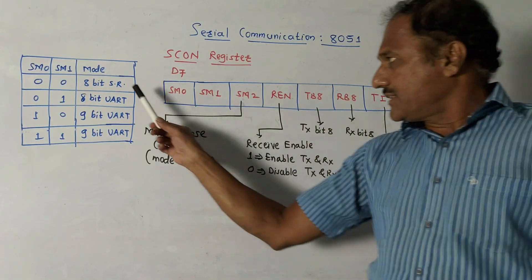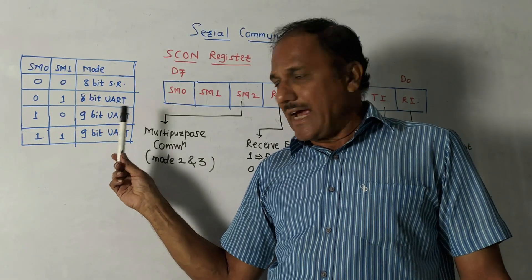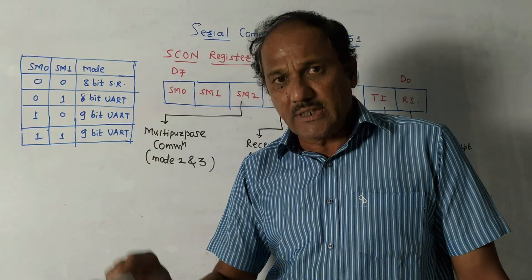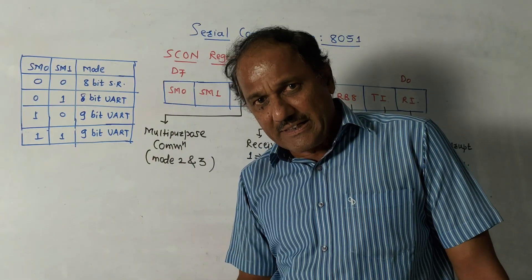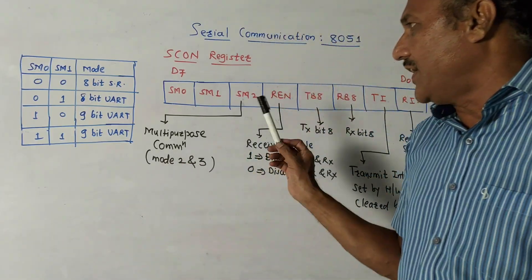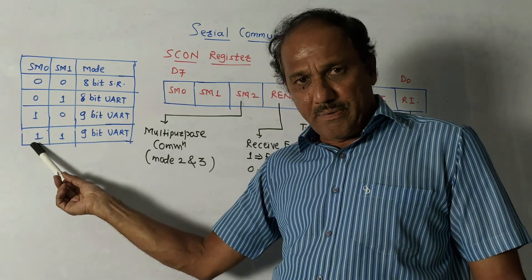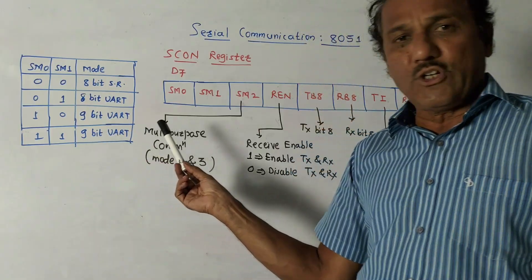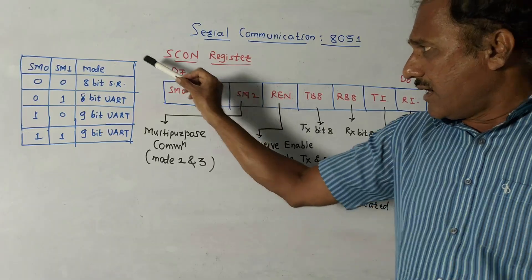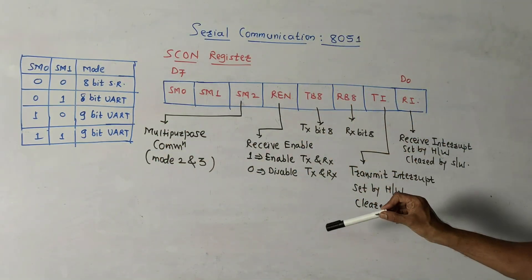If SM0 or SM1 combination is 0-0, it acts as 8-bit shift register. If combination is 0-1, it will act as 8-bit UART, universal asynchronous receiver transmitter. It is one of the standard modes for the serial port communication of 8051. If combination is 1-0, it is 9-bit UART. For combination 1-1, it is again 9-bit UART. So depending on the contents of SM0 and SM1, different modes of operation are decided.